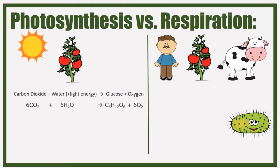The balanced equation is 6CO2 plus 6H2O gives C6H12O6 plus 6O2. Just memorize the element symbols and put a six in front of everything except glucose. Remember, glucose is C6H12O6 - that's the way I remember it.